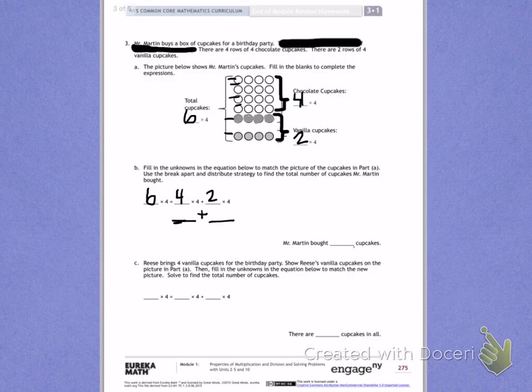4 times 4: 4, 8, 12, 16. If you have a hard time counting by 4's, use your array for help. 2 times 4: 4, 8. I have 16 plus 8. Once I add those together, I'll get my total for 6 times 4.